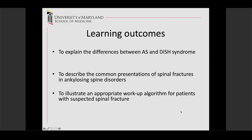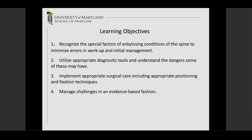Today I'd like to talk about the differences between ankylosing spondylitis and DISH, which are the two main forms of spinal ankylosis that we see. We'll talk about the common presentations of spinal fractures in ankylosing spine patients, and we'll talk about an algorithm of workup and treatment of these fractures, really concentrating on awareness, high index of suspicion, and appropriate preoperative management. It's important to recognize these fractures because missing one is catastrophic — they are much more unstable than typical spine fractures and occur with very low energy.